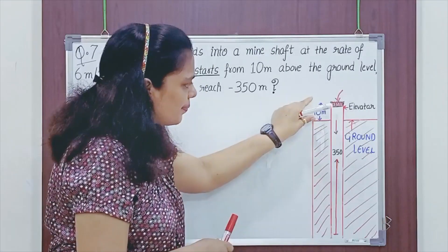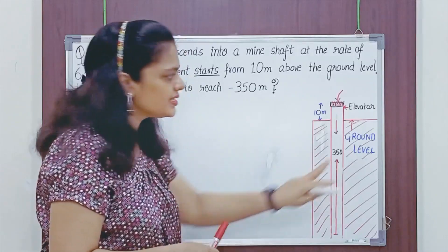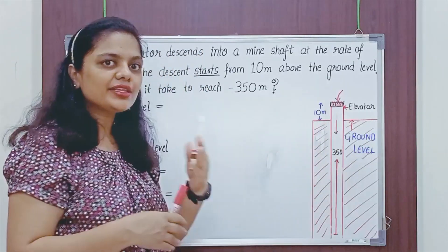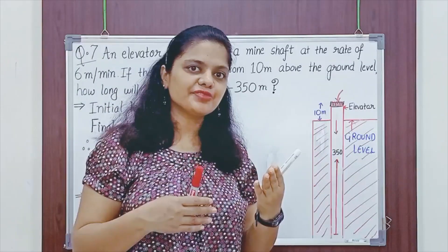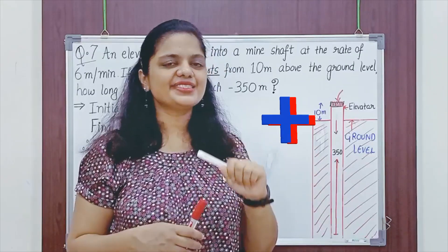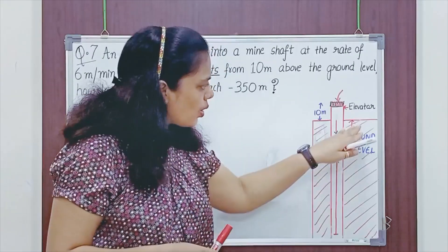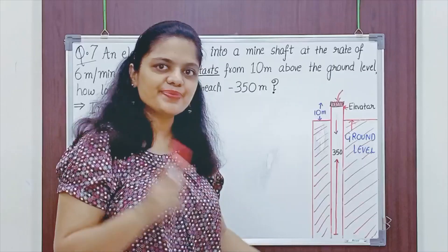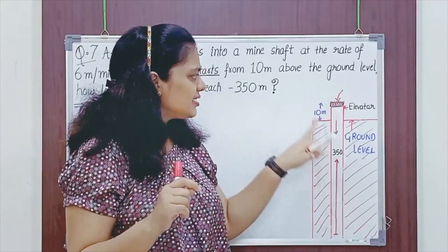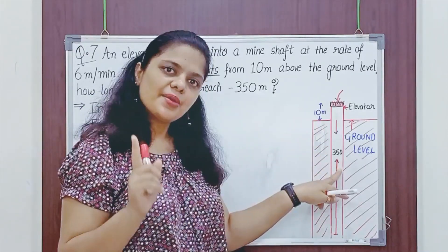So, elevator is at plus 10 meters, needs to reach minus 350 meters. This is the ground level. All the figures or positions above the ground are represented by positive integer. All the positions below the ground are represented by negative integer. So, this is plus 10 and this is minus 350.